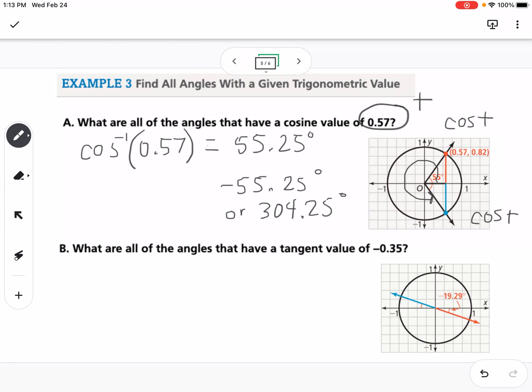So either one of those is going to give us that same cosine value. So if I go to my calculator and I type in cosine of 55.25, you should get approximately 0.57. And then if I do cosine of 304.75, we get the same value in your calculator.